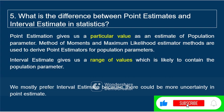What is the difference between point estimate and interval estimate? A point estimate gives a particular single value — for example, method of moments or maximum likelihood estimator are point estimators. Whereas an interval estimate gives a range of values, like 10 to 20 or 20 to 30. We mostly prefer interval estimates.